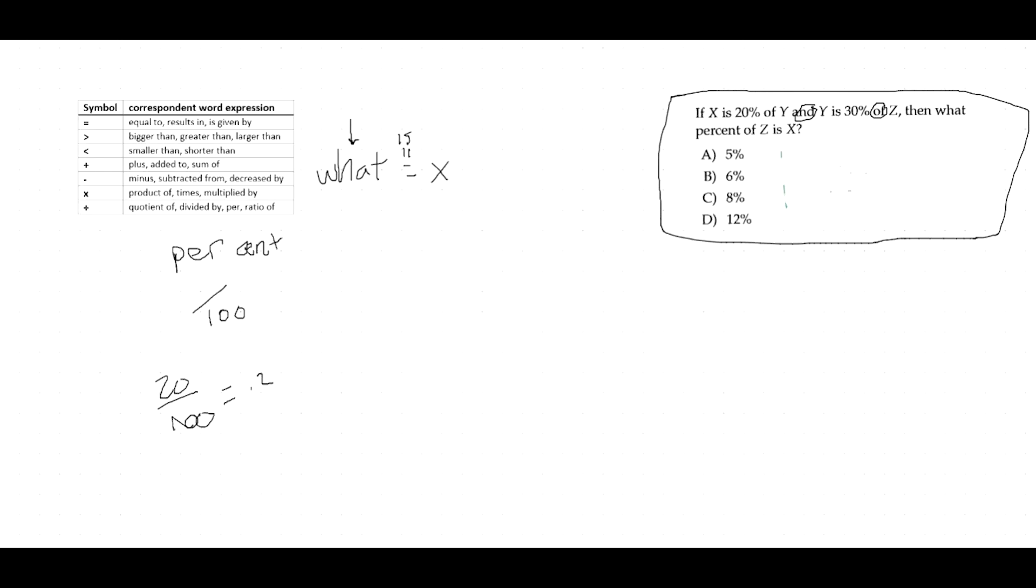So now let's dive into this question stem. If x is 20% of y. So x, what did I say for is? Equal sign. And then 20% is the same thing as 20 divided by a hundred, so 0.2. What did I say about of? It's multiply. So multiply by y. Look at that. We already wrote out our first equation and we literally did it by just translating using the rule I told you.